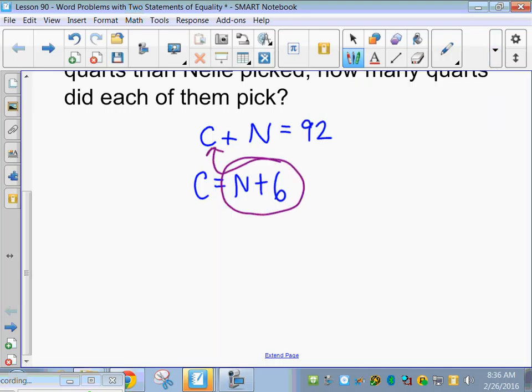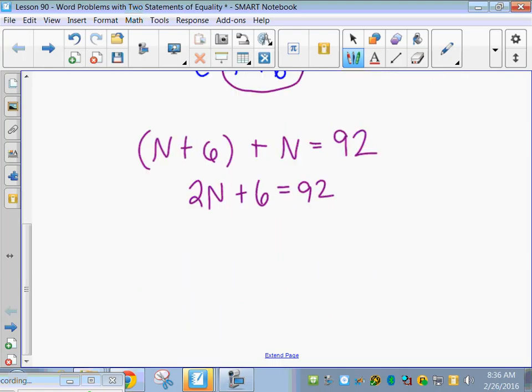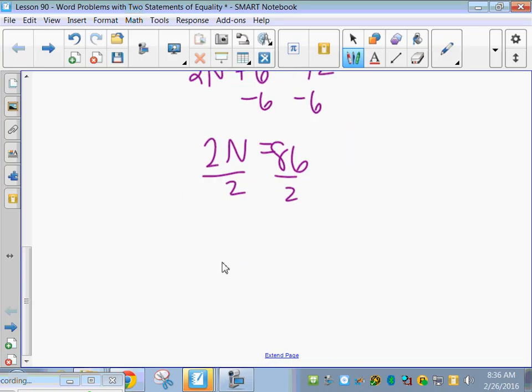So I would probably do substitution. All I have to do is replace this C with N plus six. Combine like terms, so my Ns are going to add together. Subtract six from both sides. Divide by two. So we get 43 quarts. So Nell picked 43 quarts.